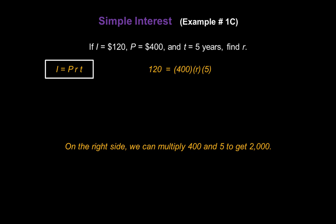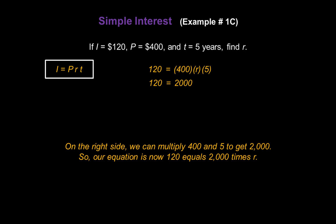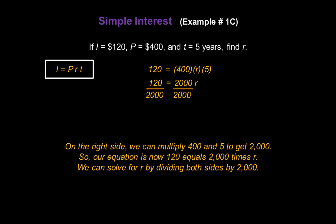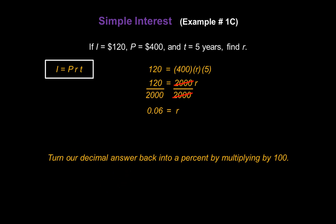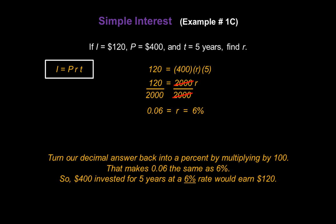On the right side, we can multiply 400 and 5 together. That gives us 2000. So our equation is now 120 equals 2000R. We solve for R by dividing both sides by 2000. On the left, 120 divided by 2000 gives us 0.06. And on the right, the 2000s cancel, leaving us with R. Now our answer is in decimal form, but we want our rate in percentage form. So we multiply 0.06 by 100, which makes it 6%. So $400 invested for 5 years at a 6% rate would earn $120.